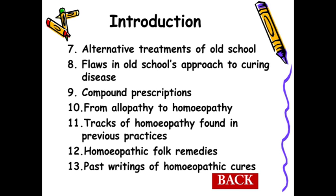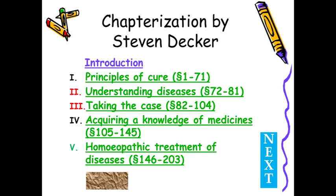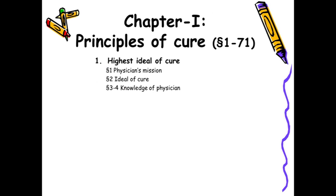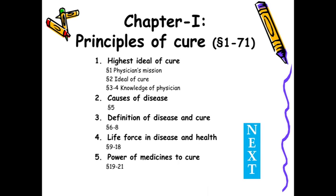That takes us back to the basic chapters. The first is the theoretical part — the principles of cure. First of all, the highest ideal of cure, that is the physician's mission, then the ideal of cure, then the knowledge of the physician — these have been well remembered from our student life. Then causes of disease: this is a most important addition which came from the fourth edition. Before the fourth edition, this chapter on fundamental cause, exciting cause, and maintaining cause was not there — particularly about fundamental causes, that is after 1828.